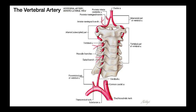From C6, it continues upward through C5, C4, C3, C2, and C1, passing through those transverse foramina on that side as it ascends.